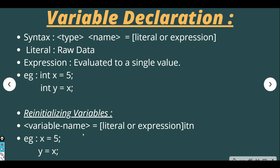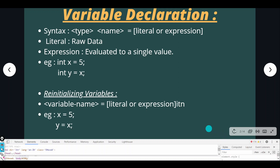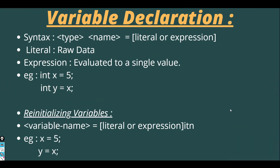Now we've seen how to declare variables. Next, we'll see how to re-initialize a variable. Re-initialization means we want to assign a new value to a previously declared variable. For example, we declared int a equals 5 — now I want to give it a different value. The syntax is just the variable name, then equals, then a literal or expression — no need to write the type again.